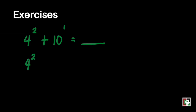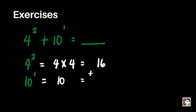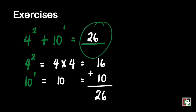First, we get the value of 4 squared: that's 4 times 4, which is equal to 16. Next, 10 to the 1st power is just 10. We're ready to add: 16 plus 10 is equal to 26. That makes our final answer 26.